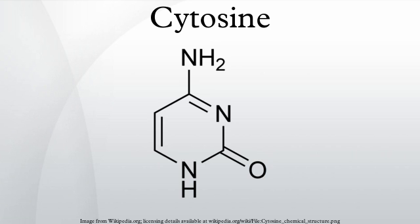Cytosine can also be methylated into 5-methylcytosine by an enzyme called DNA methyltransferase, or be methylated and hydroxylated to make 5-hydroxymethylcytosine. Active enzymatic deamination of cytosine or 5-methylcytosine by the APOBEC family of cytosine deaminases could have both beneficial and detrimental implications on various cellular processes as well as on organismal evolution. The implications of deamination on 5-hydroxymethylcytosine, on the other hand, remains less understood.